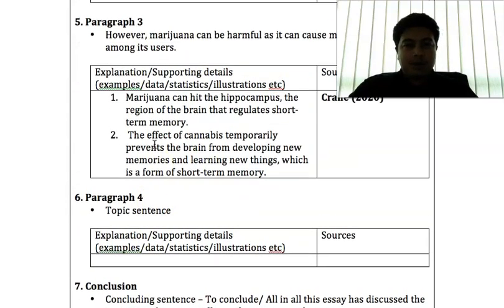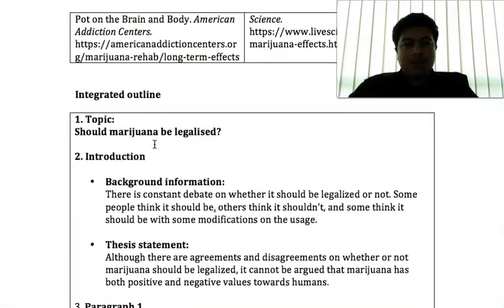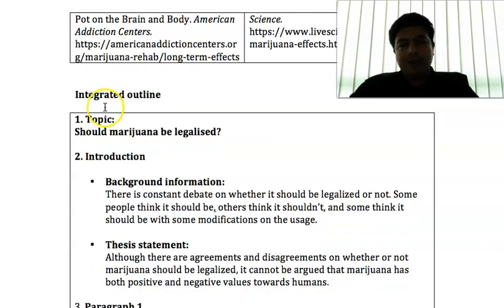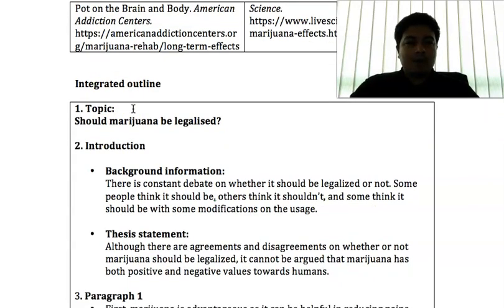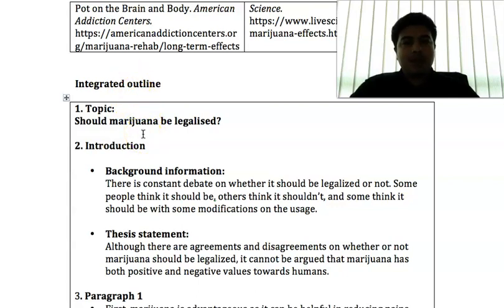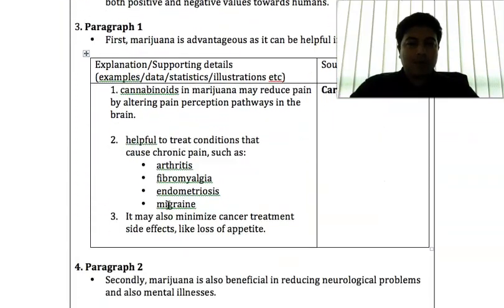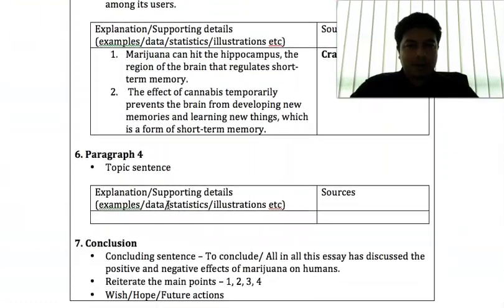This is what we call the integrated outline — a template where you outline what you are going to write in your academic essay or research paper. Once you have your integrated outline, you are ready to write your essay in full. What you do is straightforward: simply translate whatever points you have in the outline into a proper essay.